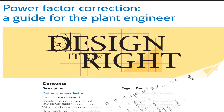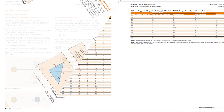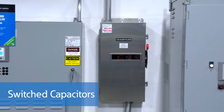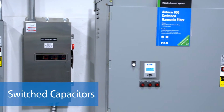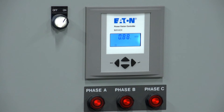Fixed capacitors can be activated with motors to compensate for the reactive power needed to magnetize the windings. There are tables within Eaton's design-it-right guide that can be used to help determine the right size for these capacitors. Fixed capacitors are usually the most economical, but may not be the most appropriate for all situations. Where loads vary, switched capacitors like the Autovar 300 or Autovar 600 use controllers to improve the power factor as loads are switched on and off, by automatically switching groups of capacitors in and out.